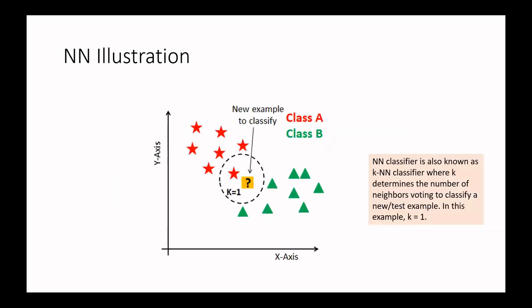Here is a pictorial illustration in two dimensions. Suppose we have training examples from two classes, class A and class B, and an example to classify marked with a question mark. If we use a nearest neighbor classifier with K equal to one — looking only at the closest neighbor — this example will be classified as class A, because the class A example is closest to it.